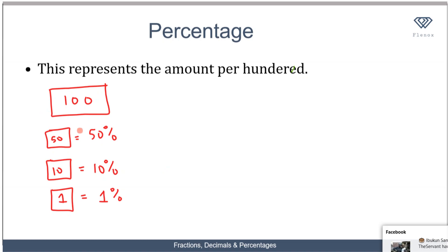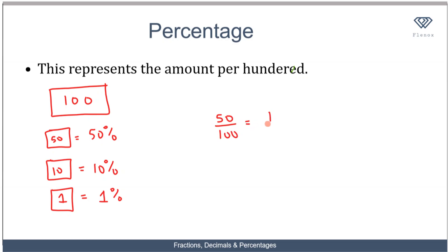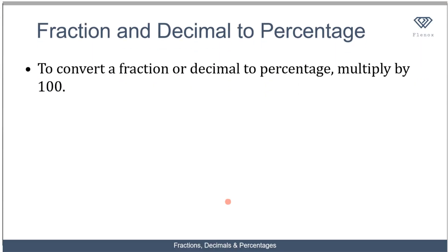Percentage means the amount of something per 100. To convert from a percentage to a fraction, divide the percentage by 100. So 50 percent equals 50 over 100, which equals one half. 10 percent equals 10 over 100, which equals 1 over 10. And 1 percent equals 1 over 100.